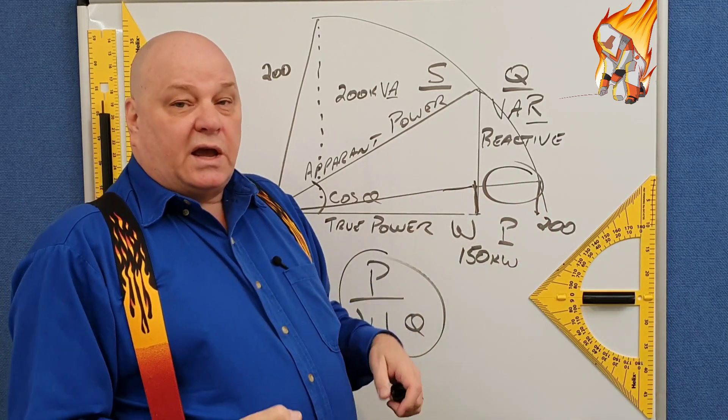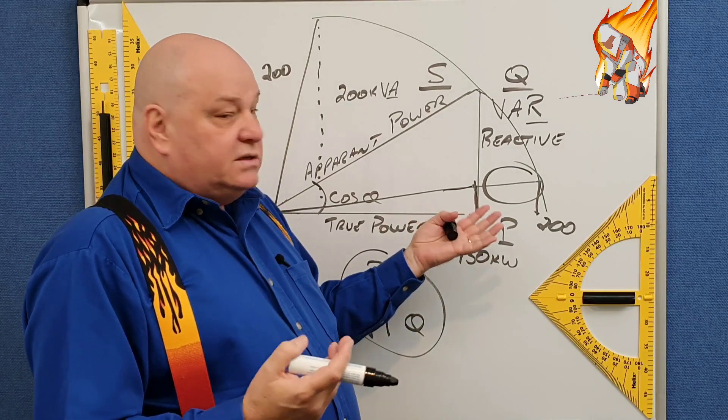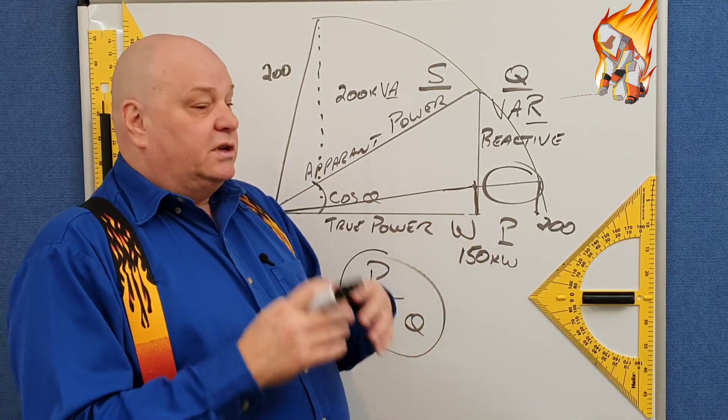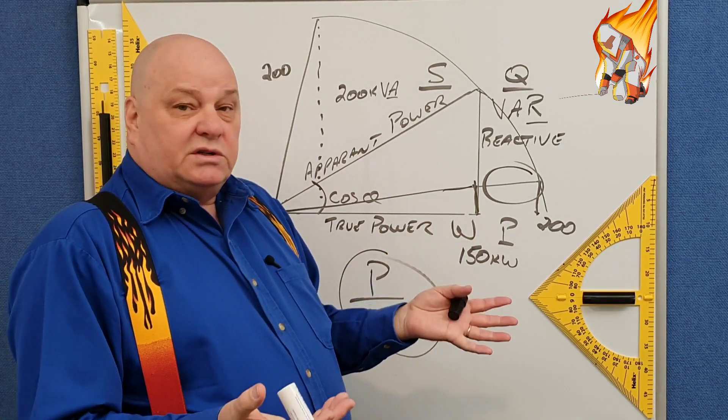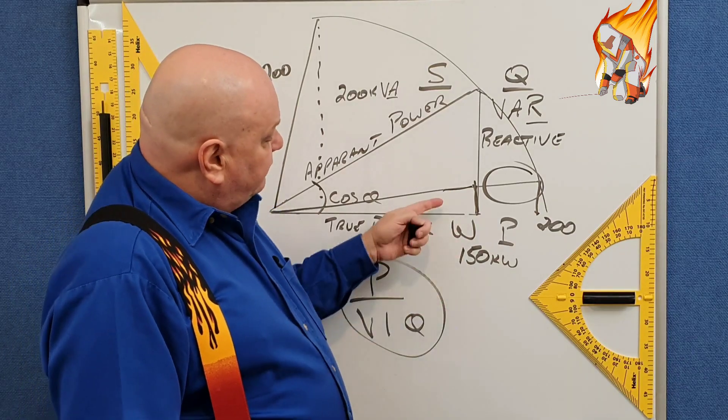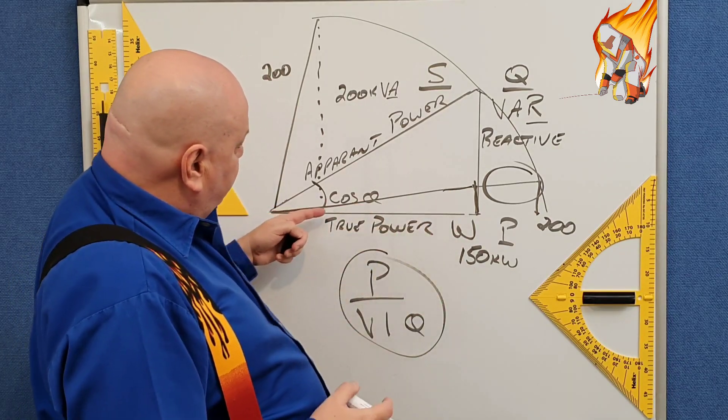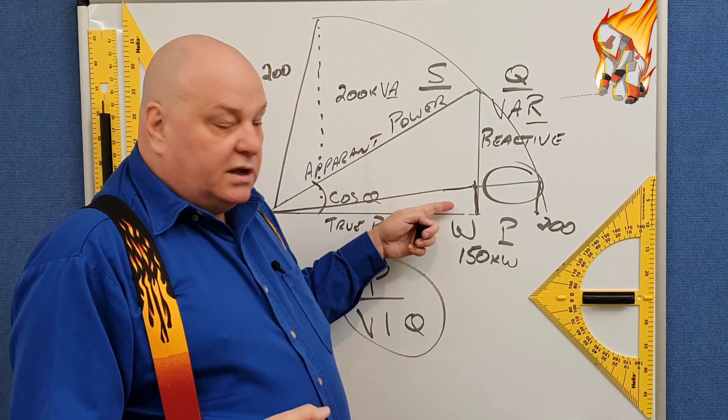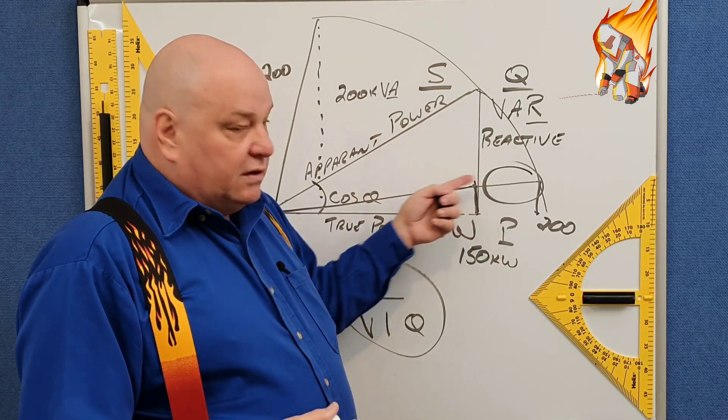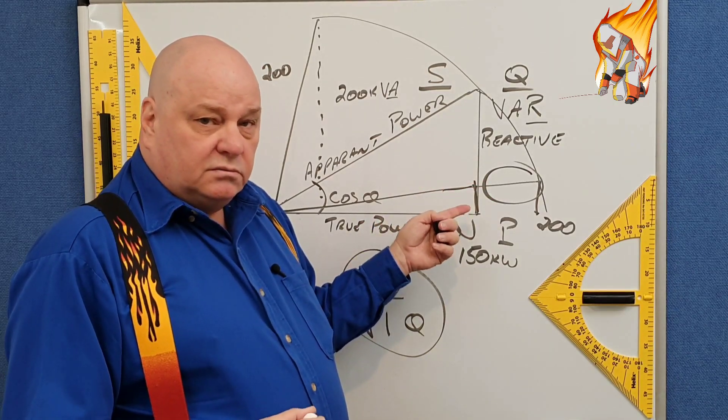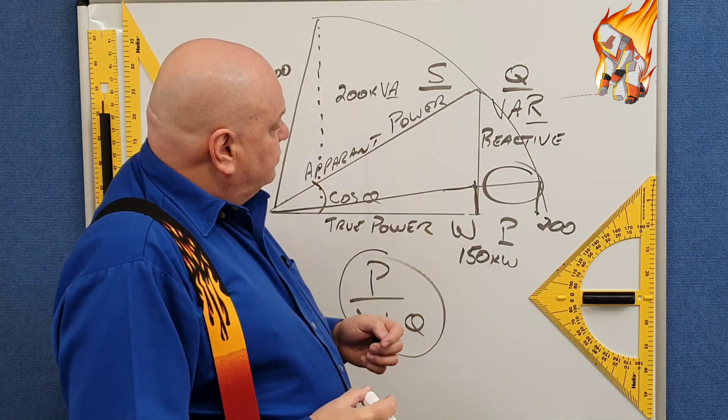Current's reduced and the cable has less heat in it. There's less stress on the cable, less stress on the boards, less stress on the equipment. So if we can keep our power factor down to a decent angle, well, then everything's going to run cooler.